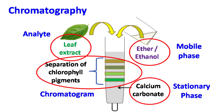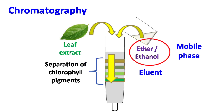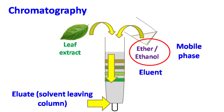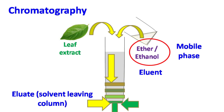Now, besides all these terms, there are also some similar terms used in chromatography. The mobile phase is also known as eluant. The mobile phase leaving the column is known as eluate. And the sample that is coming out from the column is also known as eluate.